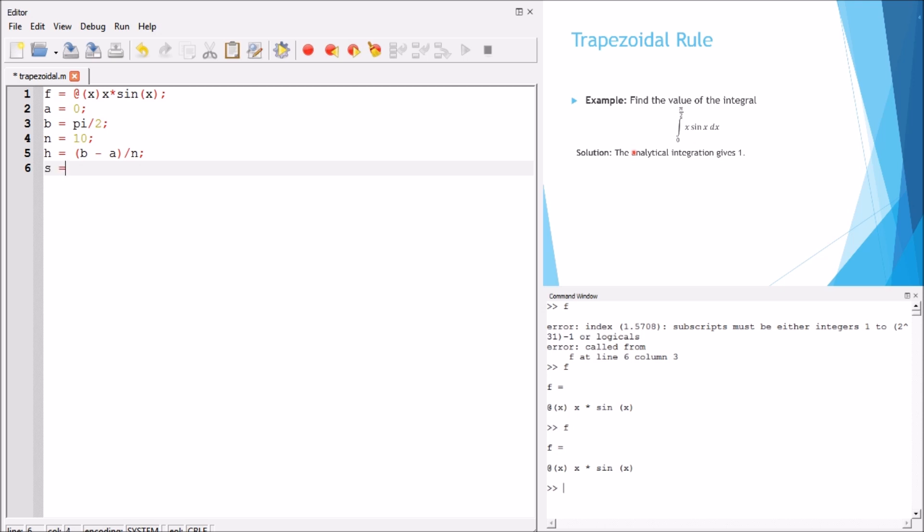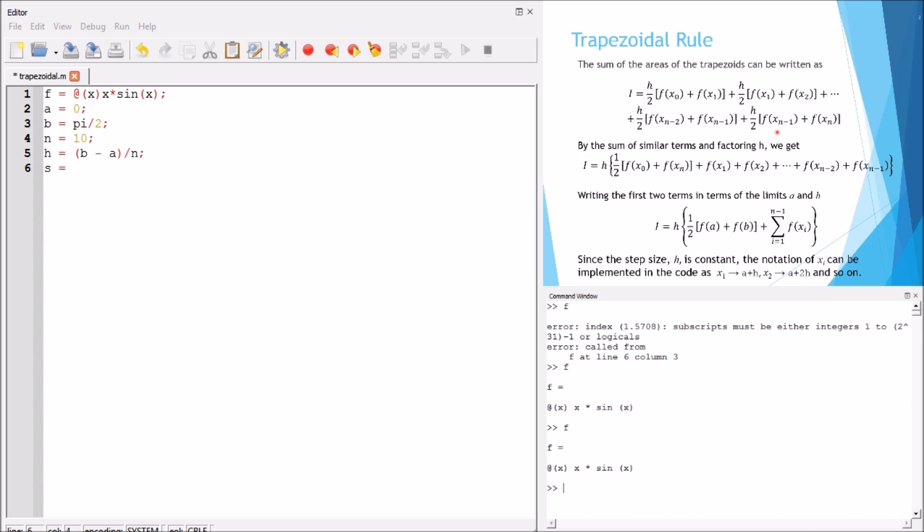Now s, the summation variable, will be equal to initially, let's return to the slide. Now you see in the upper right window the formula here. So we can start with this value in the summation and then add the other summation terms in the loop. So we can say here 0.5 multiplied by f of a plus f of b. So this is the first value.